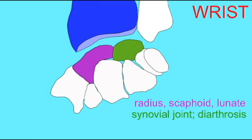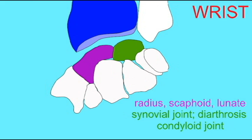The wrist joint is a synovial joint because it has a joint capsule. It is a diarthrosis because it is freely movable, and specifically it is a condyloid joint. Typical of condyloid joints, it allows for movement in two separate planes.